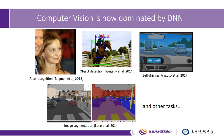As we know, nowadays, computer vision is dominated by deep neural networks. The applications include face recognition, object detection, self-driving, image segmentation, and so on.